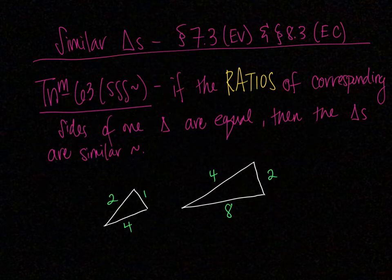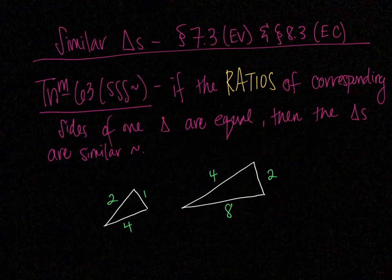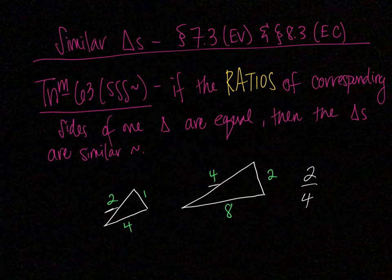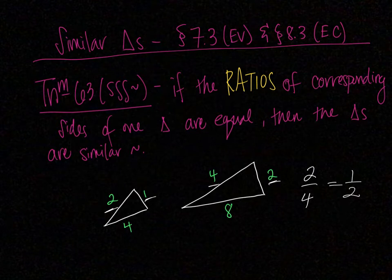So for example, what that might look like for us is if I were to take my 2 and my 4, make it 2 to 4, then go to the other one, 1 to 2, make that 1 to 2. Are those equal? Yes, 2 fourths is the same thing as 1 half.